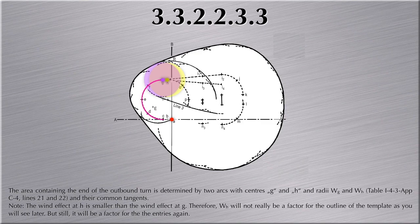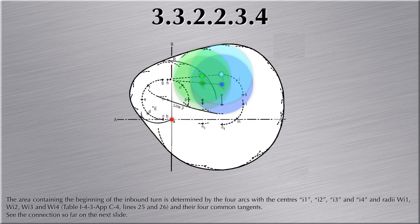Paragraph 3.3.2.2.2.3.3 discusses the area containing the end of the outbound turn, which is determined by the wind effect at G and H. Note that H has less wind exposure time than G and is hence a little less significant — hence a smaller radius. Paragraph 3.3.2.2.2.3.4 discusses the area containing the beginning of the inbound turn, determined by the four arcs with centers I1, I2, I3, and I4 with radii WI1, WI2, WI3, and WI4.